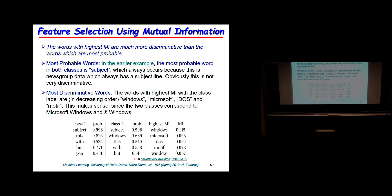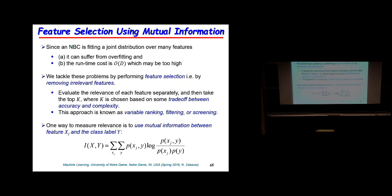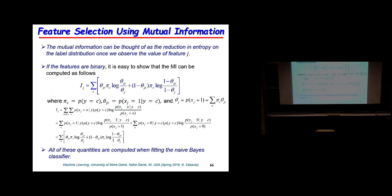For binary classifiers, mutual information can be computed analytically. Using the summation formula over the two classes and the binary features taking values zero or one, you arrive at an analytical formula in terms of the probability that feature j is on in class c, along with prior probabilities. This is a trivial calculation and mutual information is very useful for feature selection.